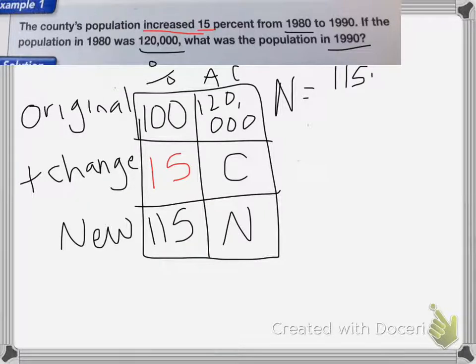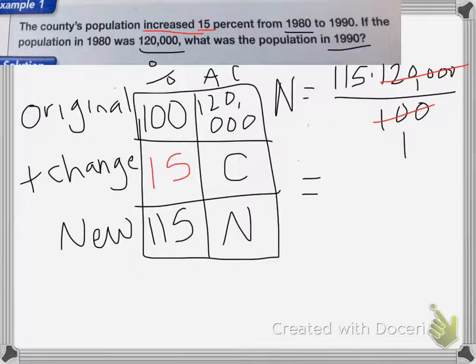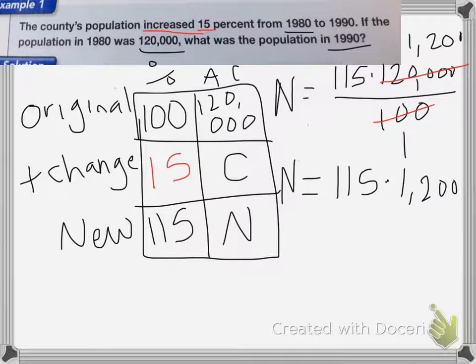So I end up with n equals 115 times 120,000 divided by 100. I can cancel the 100 and the 120,000. 120,000 is going to equal 1,200. So now I have n equals 115 times 1,200. After you multiply that together, that will equal 138,000.